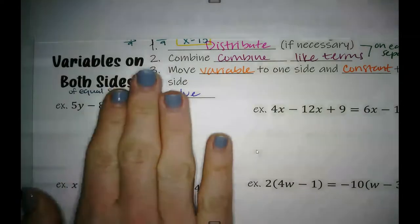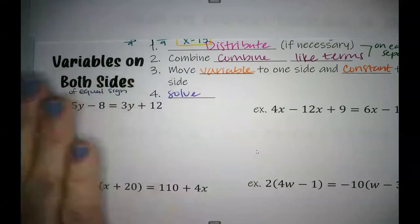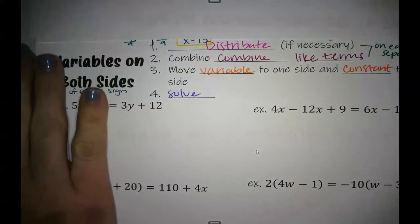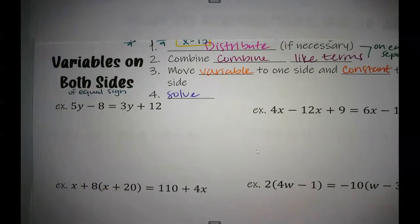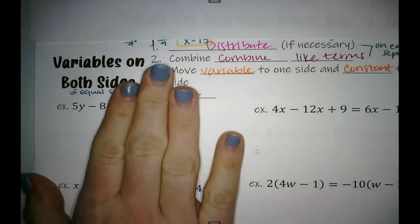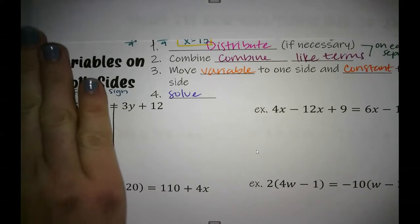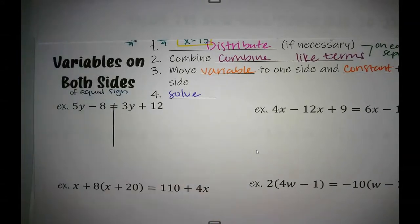Do we have anything to distribute on this side of the equation? No. Do we have anything to distribute on this side of the equal sign? No. Do we have any like terms on this side to combine? No. Do we have any on this side to combine? No. Remember, the ones with the variables and ones without variables, we cannot combine together.